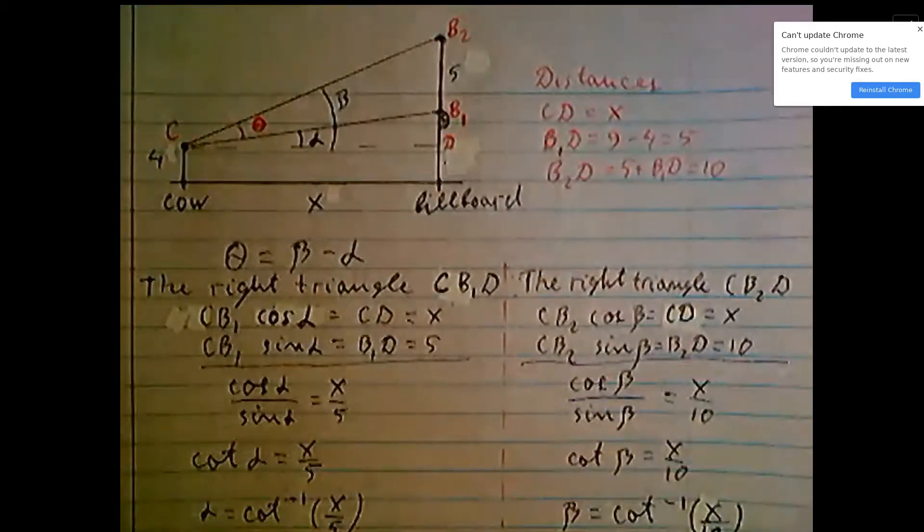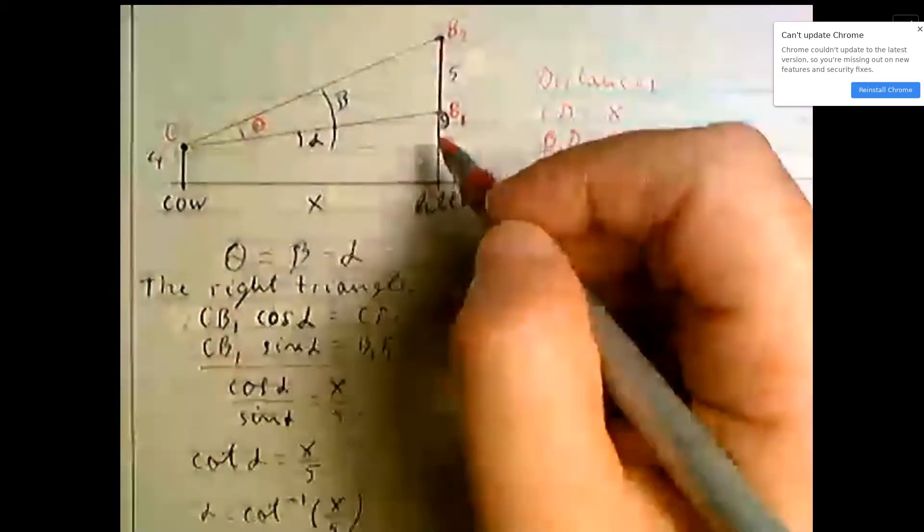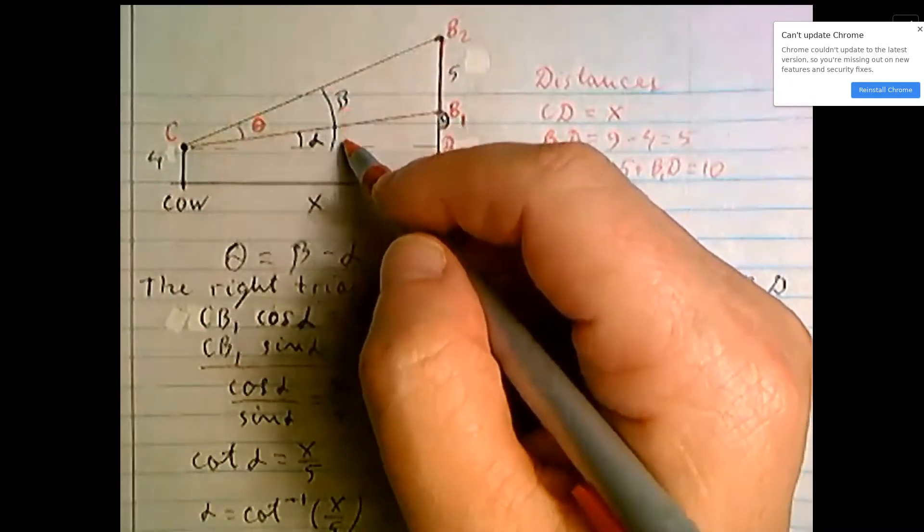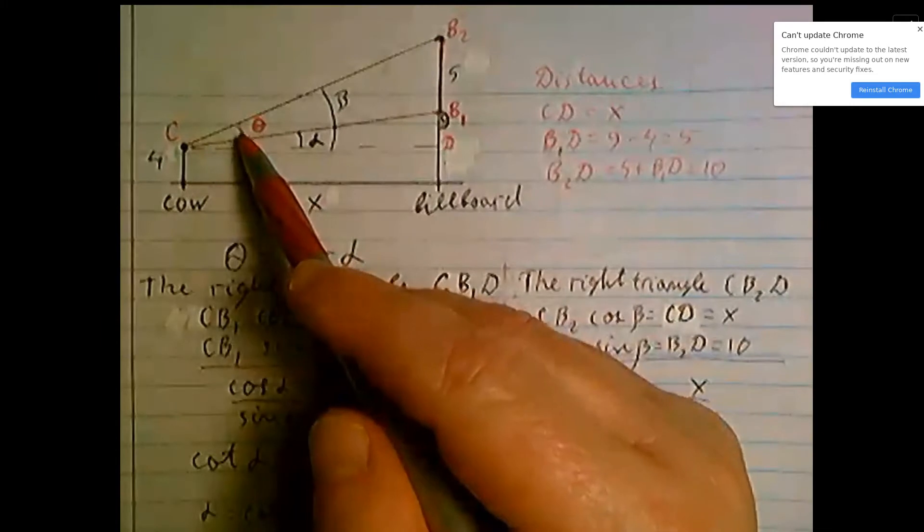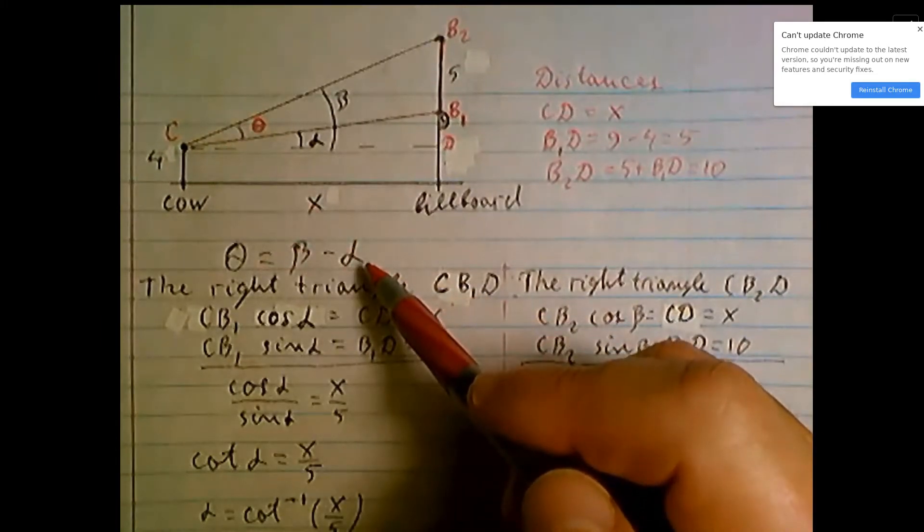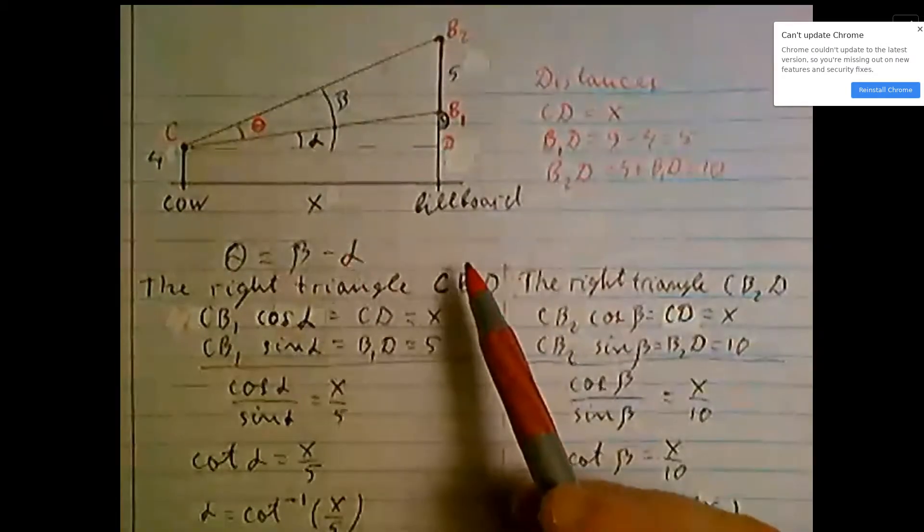Now let's denote this angle as alpha, this angle beta. Theta is the difference beta minus alpha. It's convenient to find first alpha and beta.